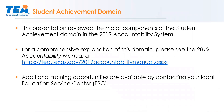This was a high-level overview of the student achievement domain in the 2019 accountability system. There are additional components and caveats. For a comprehensive explanation, please review the 2019 accountability manual at the TEA website. If you're looking for additional training opportunities, you can contact your local education service center — they host trainings on accountability and assessment and are always happy to do professional development.